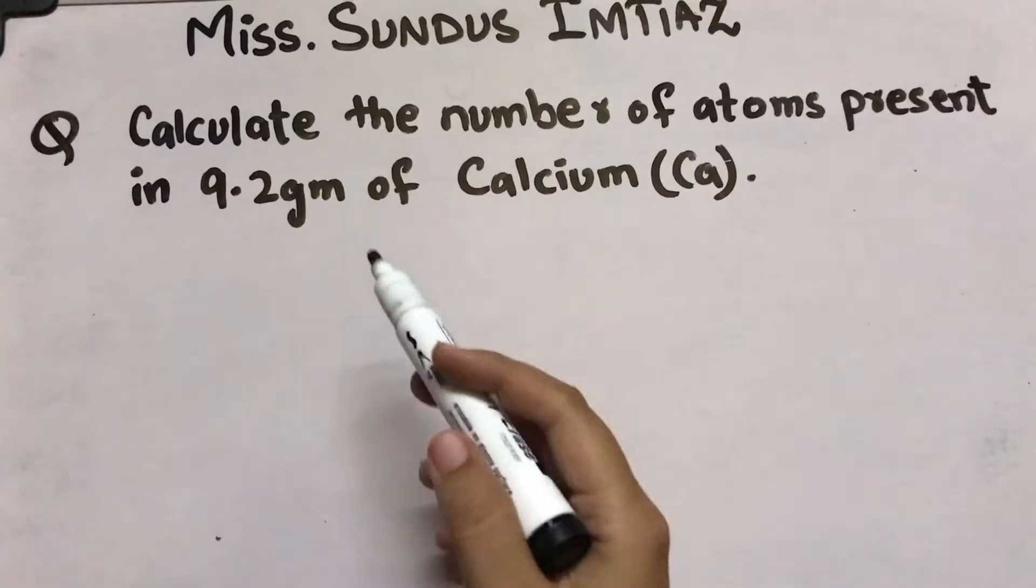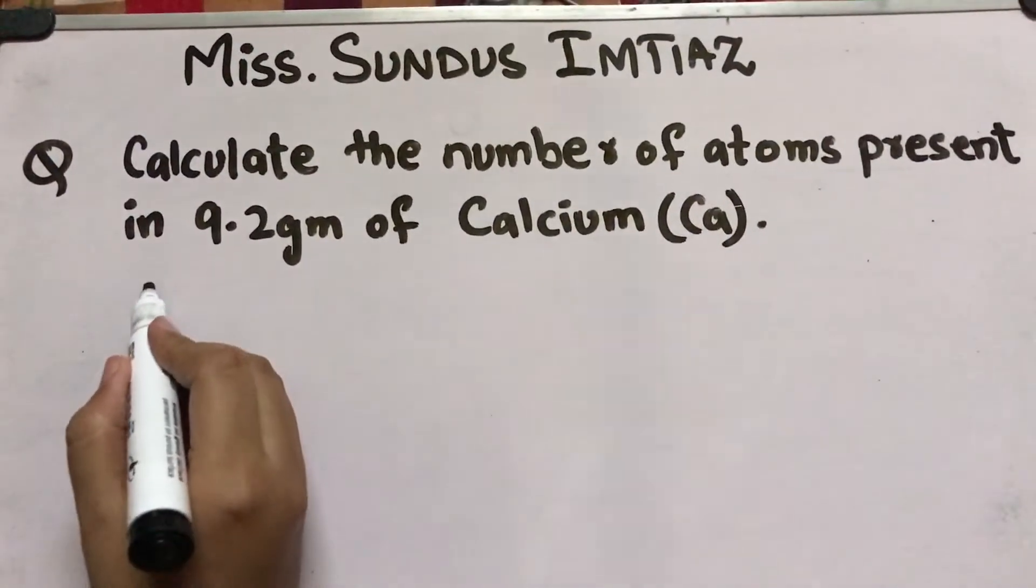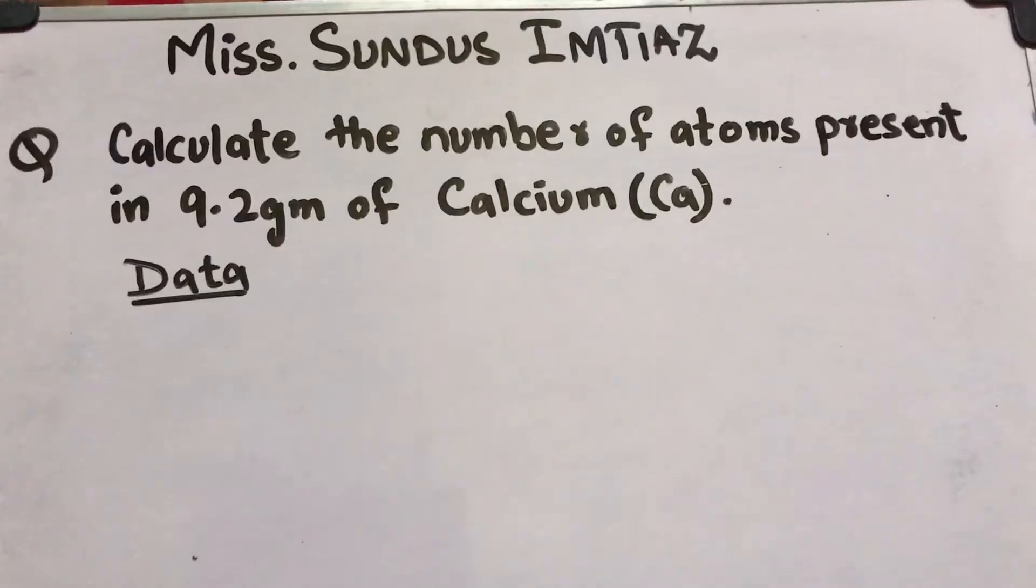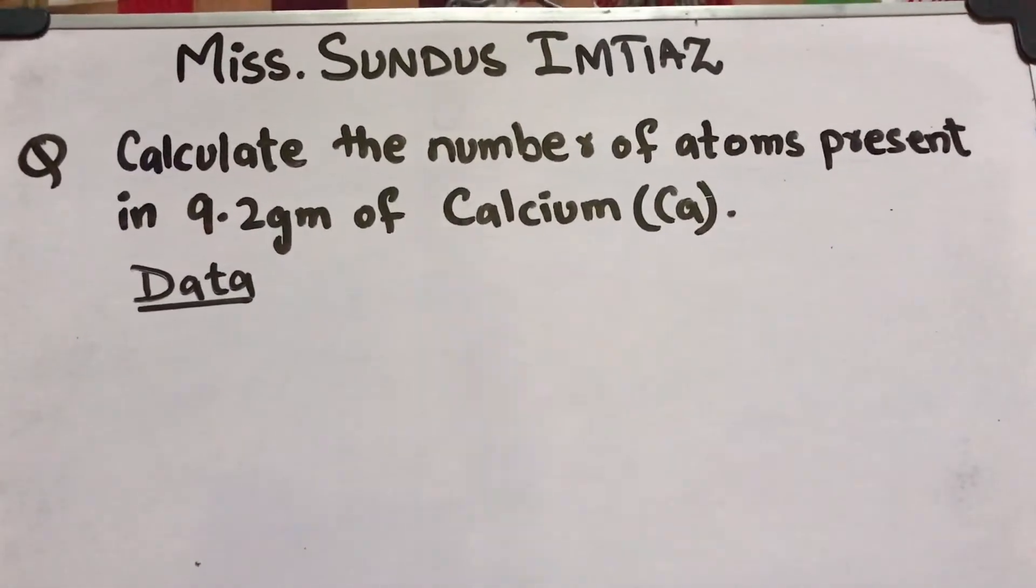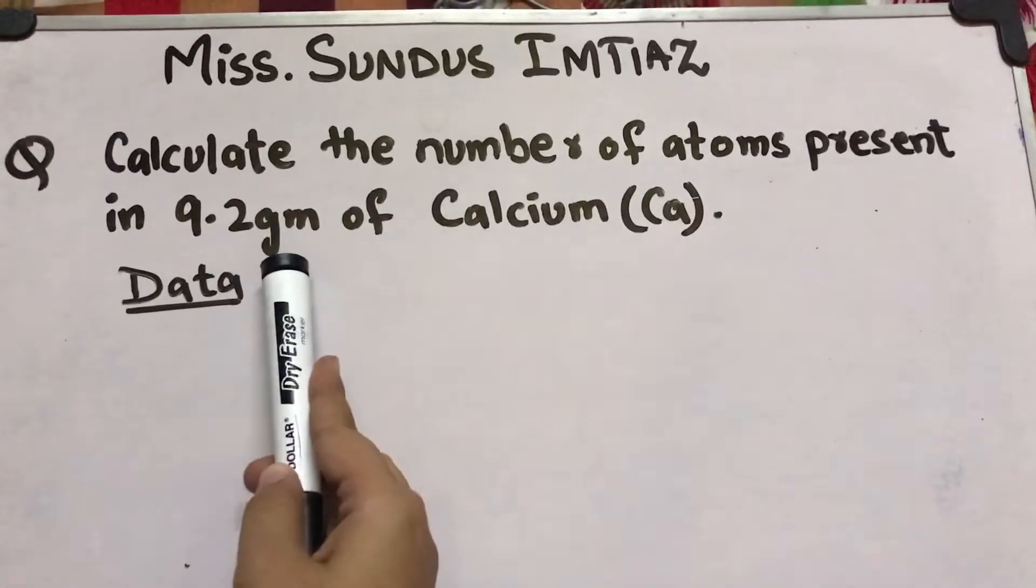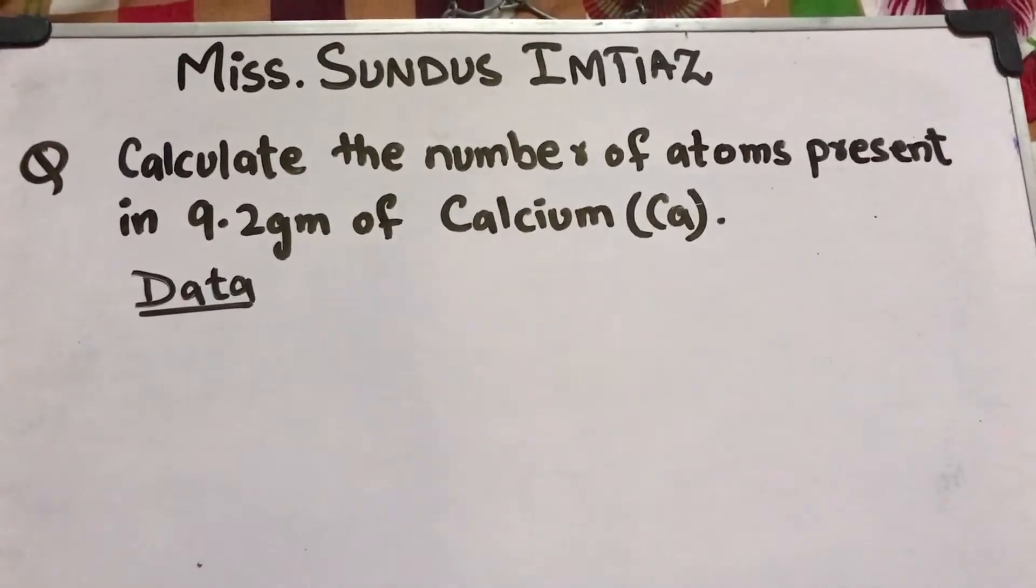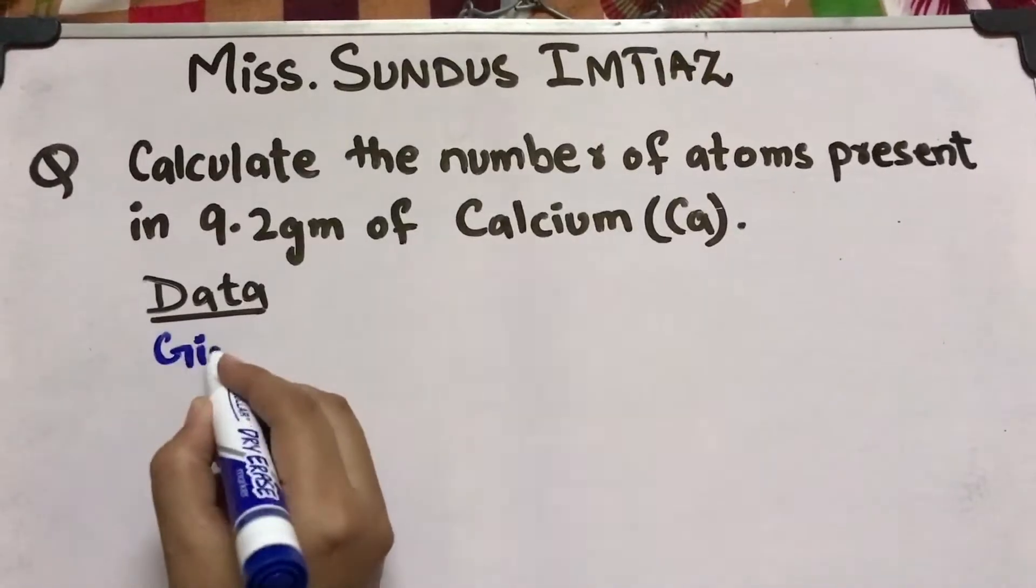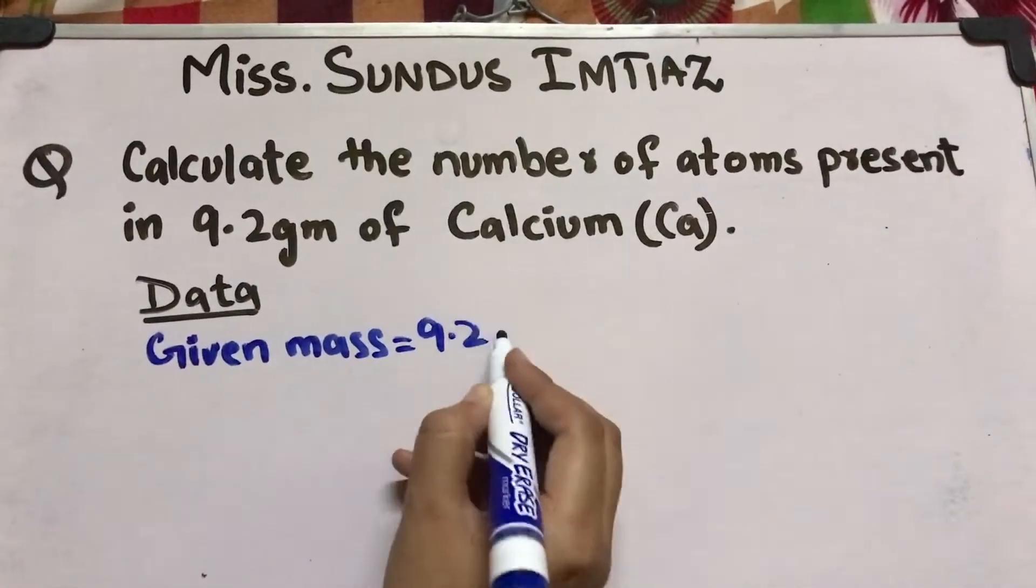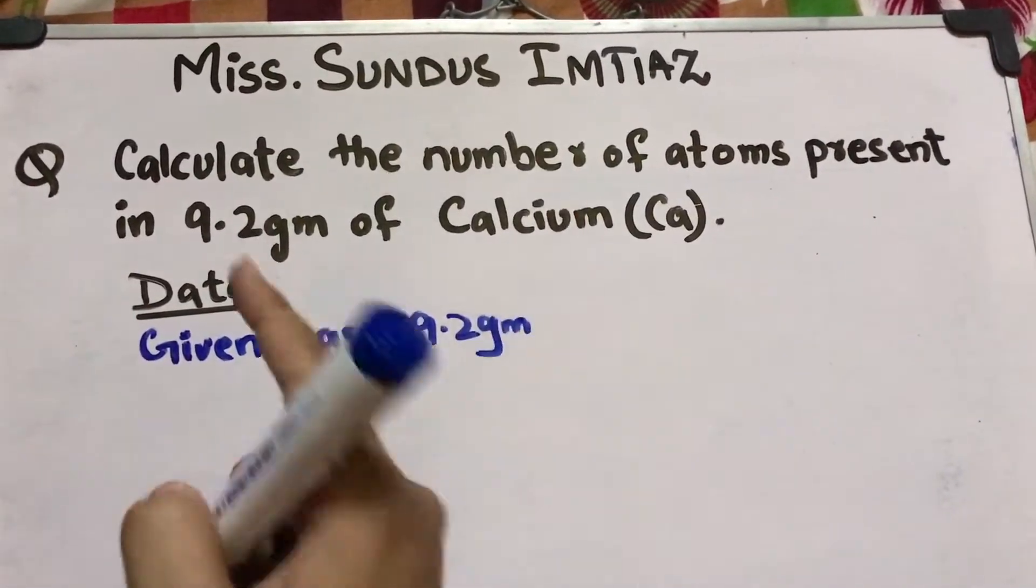When we solve numerical problems, the first thing we have to do is make a data section. The data is always that thing which is given. Now, you are showing some number in grams. Grams is a unit for mass, so given mass here is 9.2. So I write given mass is 9.2 grams.